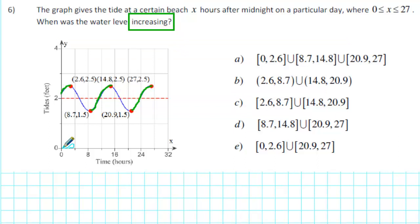Between x equals 0 and x equals 27, we see that the graph is rising on three separate intervals.